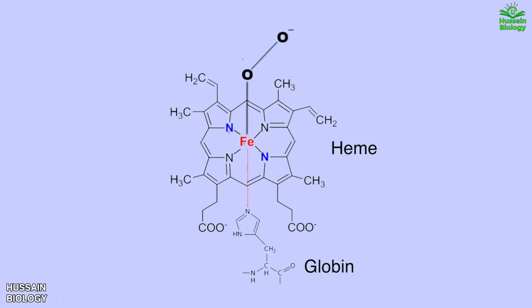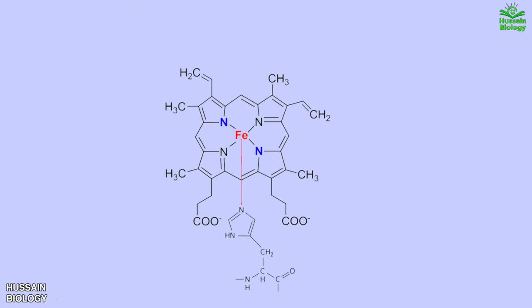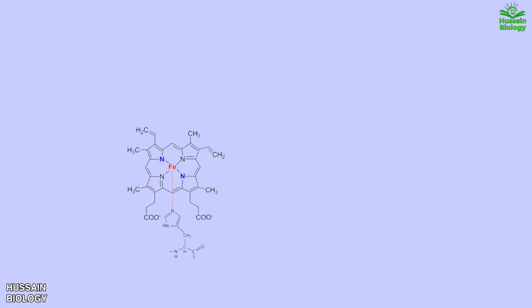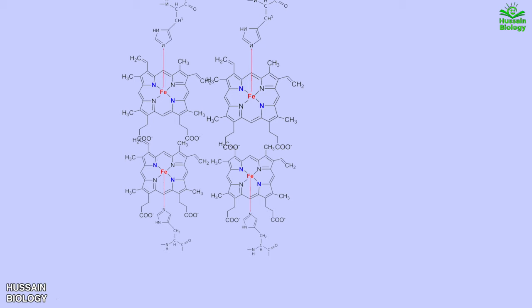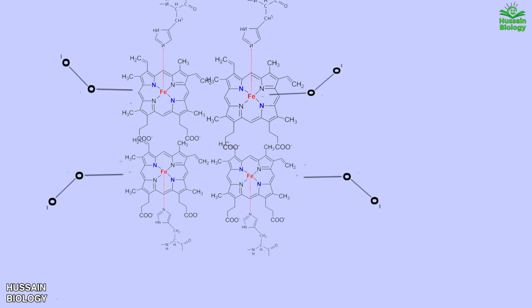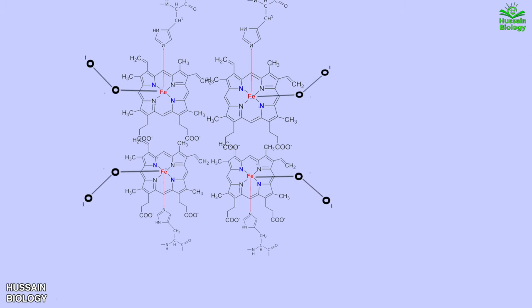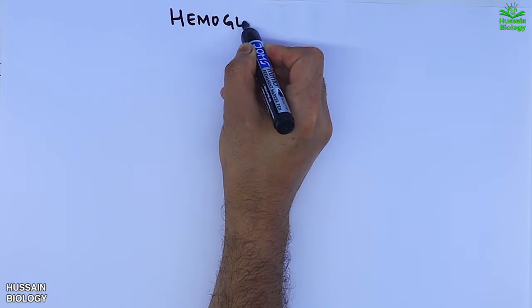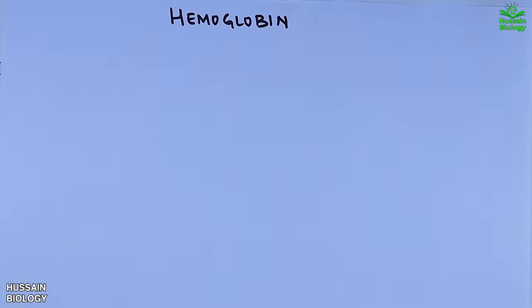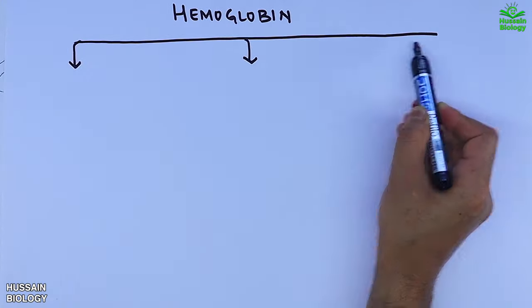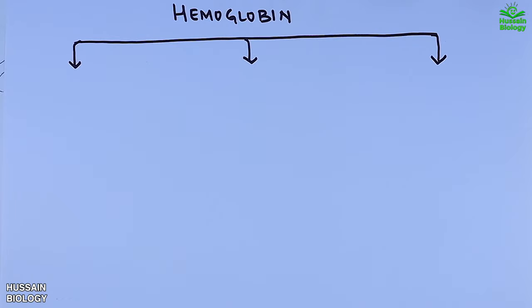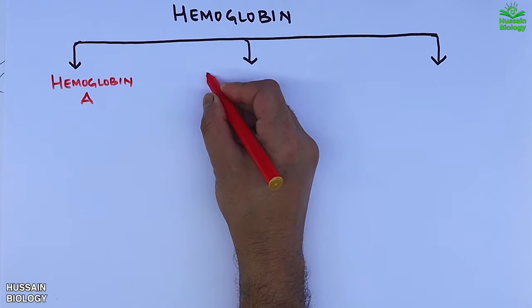This makes one hemoglobin molecule, but hemoglobin exists as a tetramer in the RBC. Four hemoglobin molecules combine together to form a tetramer, as shown in the diagram. In this tetramer we now have four oxygen-binding sites which can bind four oxygen molecules, as shown in the animation.